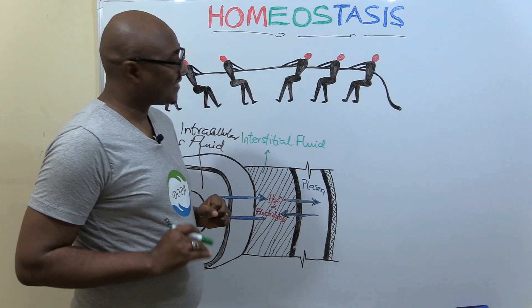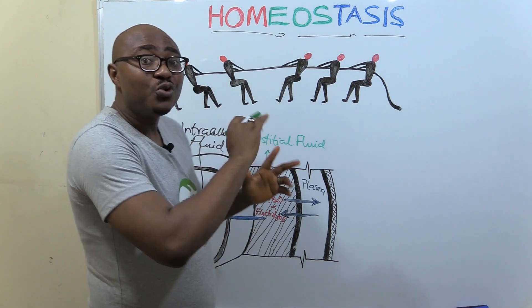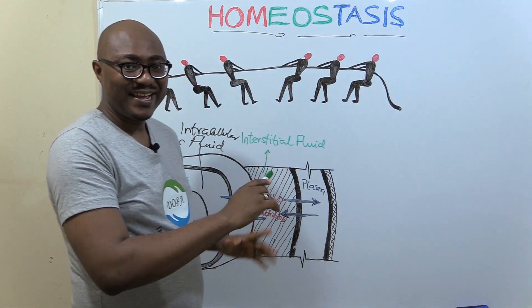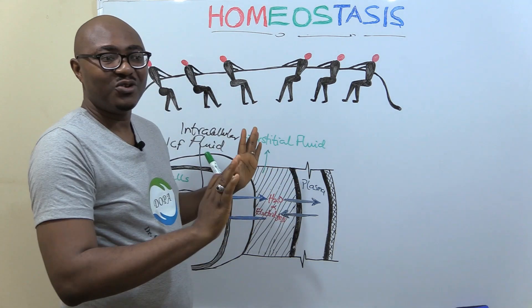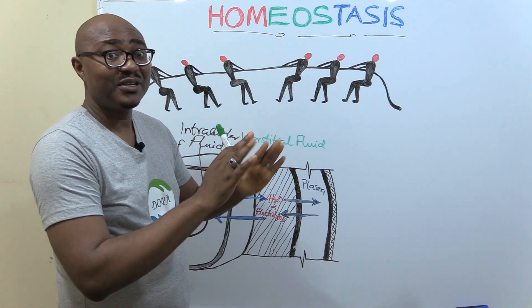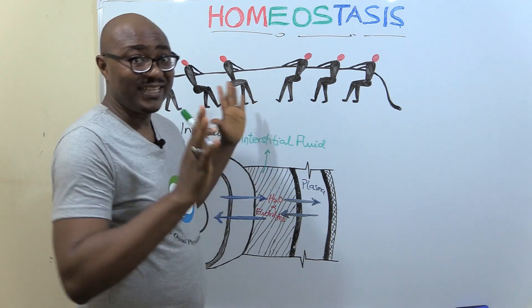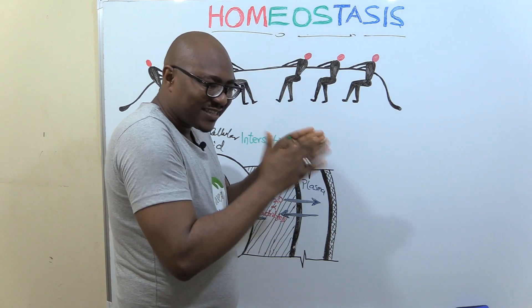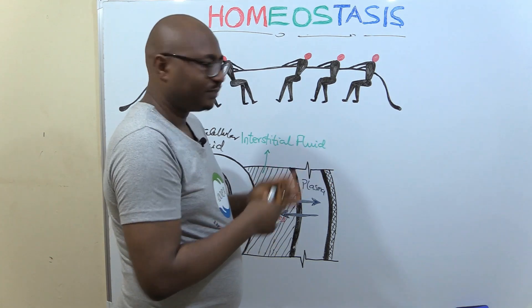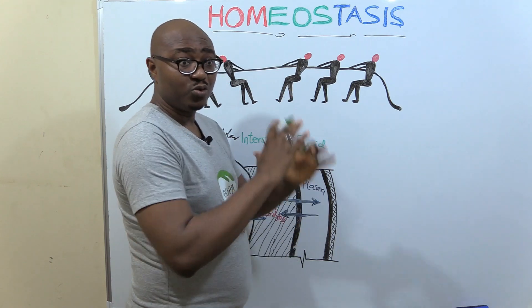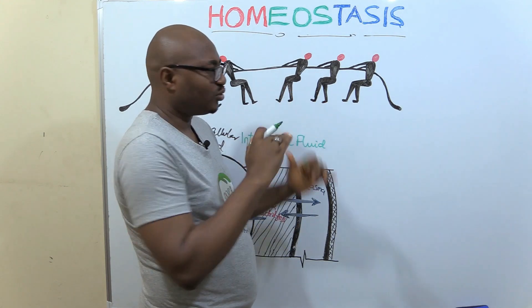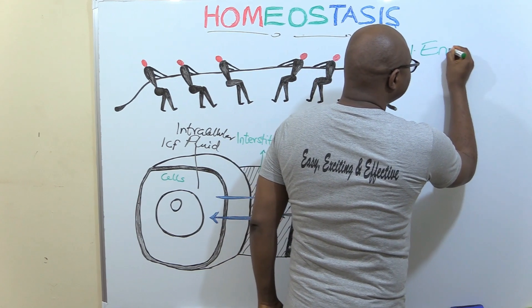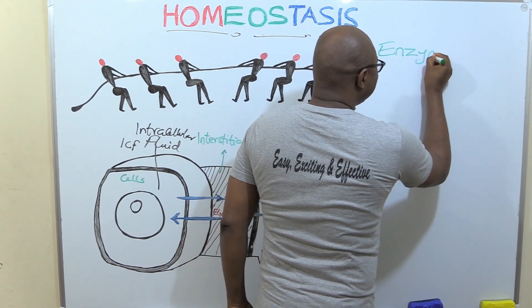Welcome back. Why does the body want stability and not move too much? We are going to look at homeostasis from the standpoint of enzymes. Enzymes facilitate chemical reactions, and physiological processes and functions have to do with chemical reactions.